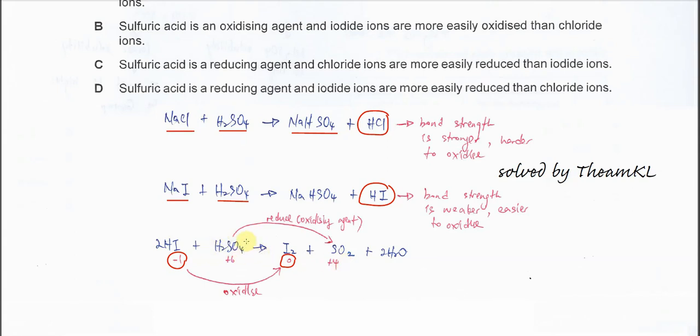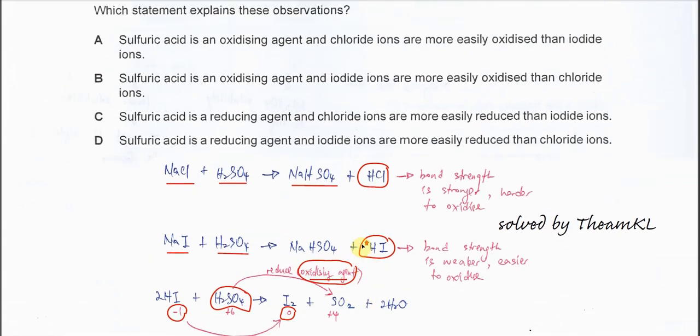When this undergoes reduction, we know it is an oxidizing agent. It tries to oxidize the iodide to iodine. So now we know what is the oxidizing agent and what is the reducing agent. Let's start.